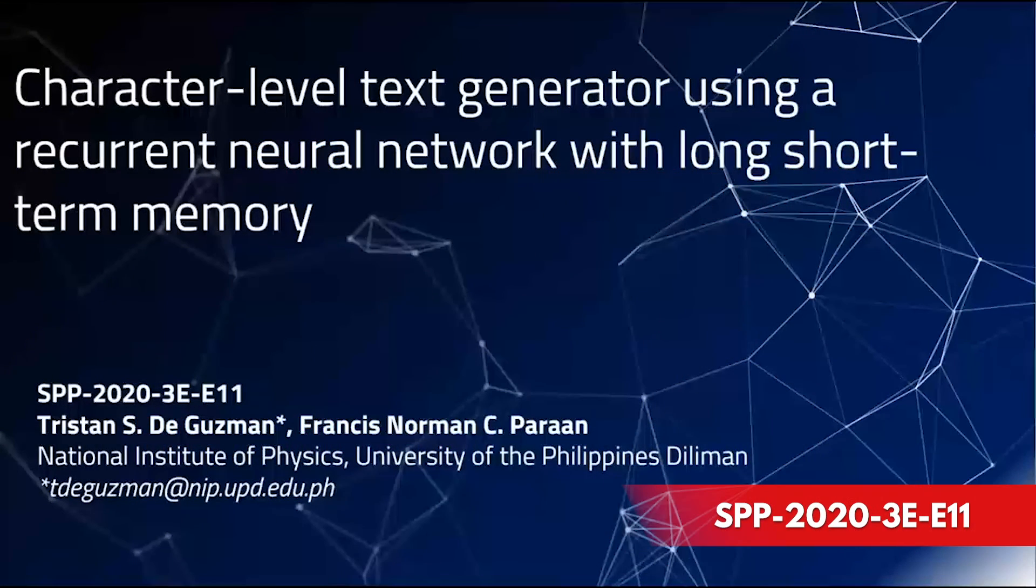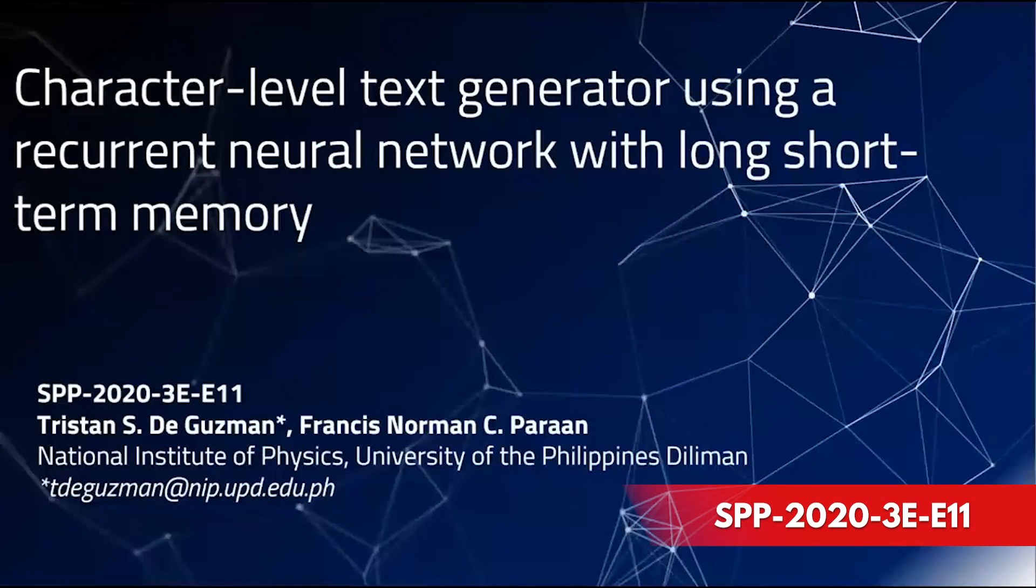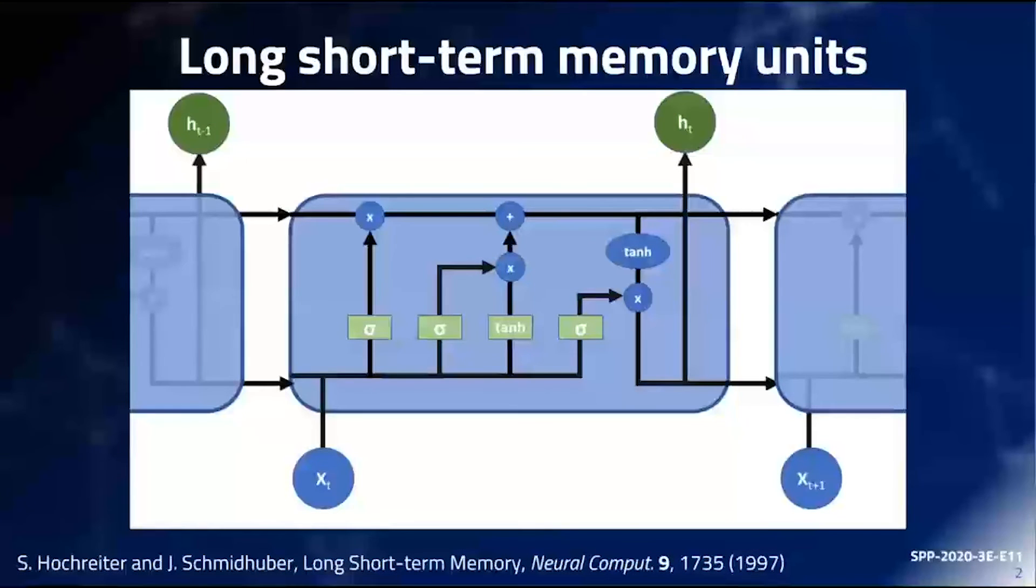Good day, I am Tristan de Guzman and along with my co-author Francis Paraan, who will be presenting about how we will generate text using recurrent neural networks with long-short-term memory and evaluate the model's performance. LSTM cells feature memory cell states so that the model can achieve correlations within the sequence. This architecture will be less susceptible to the vanishing gradients during training, which can cause failure. LSTMs are available in several machine learning toolkits like the Keras API.